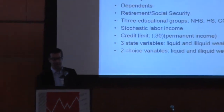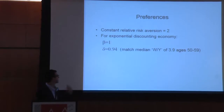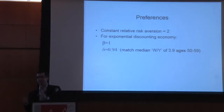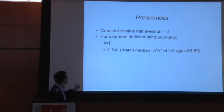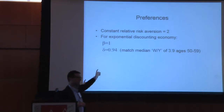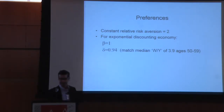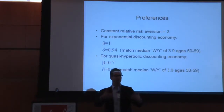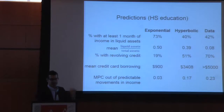We look at this framework with constant relative risk aversion of 2, comparing exponential agents and hyperbolic agents as separate economies. For exponential economies, beta equals 1, delta equals 0.94 — a 6% discount rate calibrated to match observed wealth formation between ages 50 and 59. For hyperbolics, we assume a 30% short-run discount rate and a 4% long-run discount rate, also calibrated to match observed levels of wealth formation.